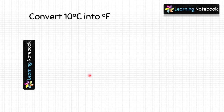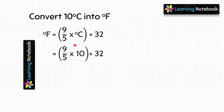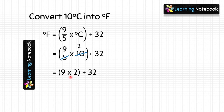The question is: convert 10 degrees Celsius into Fahrenheit. We are given temperature in Celsius and we have to convert it into Fahrenheit. Using the formula 9/5 into Celsius plus 32, let's put the value of temperature in Celsius here and we get 9/5 into 10 plus 32. First, we will solve 9/5 into 10 — simplify it and we get 9 into 2 plus 32. Now, 9 into 2 is 18, so we get 18 plus 32.